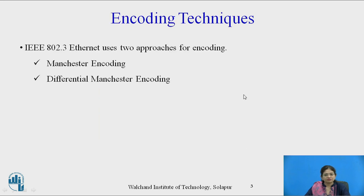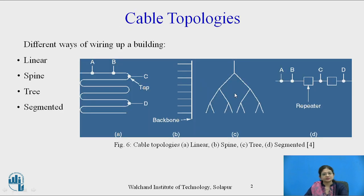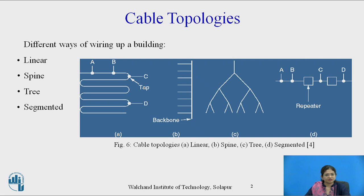The third type of topology is tree topology, where the stations are arranged like the branches of a tree. The next type is segmented topology, which is used to set up large networks. Here multiple cables are connected with the help of repeaters. A repeater is a physical layer device responsible for receiving a signal, amplifying it, and transmitting it in both directions.